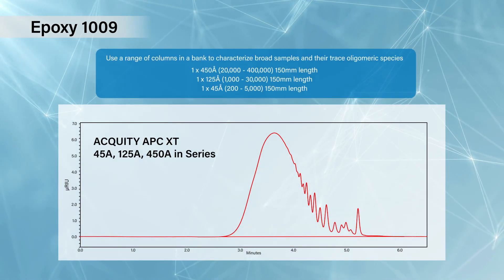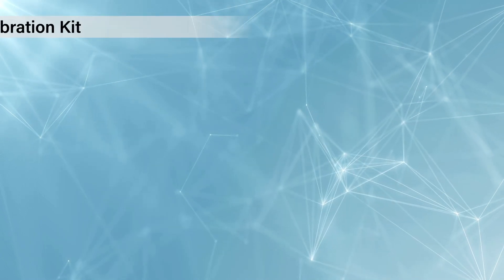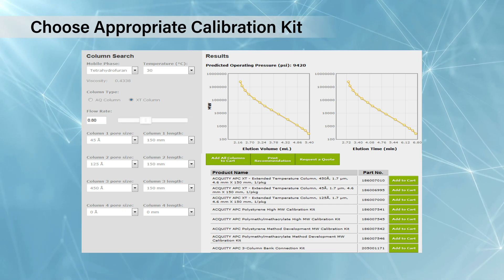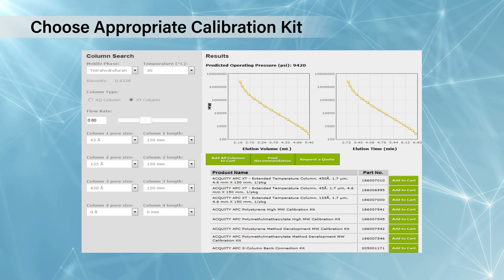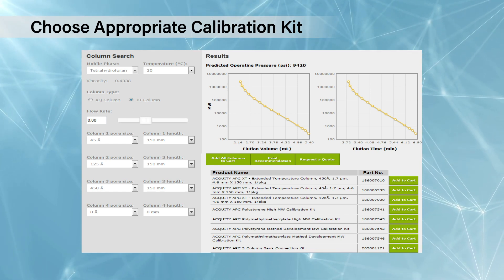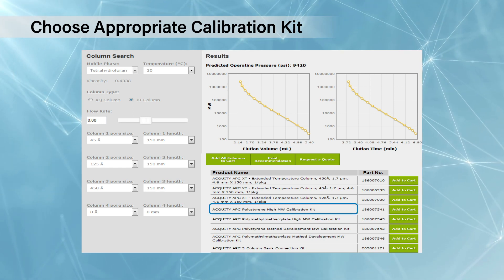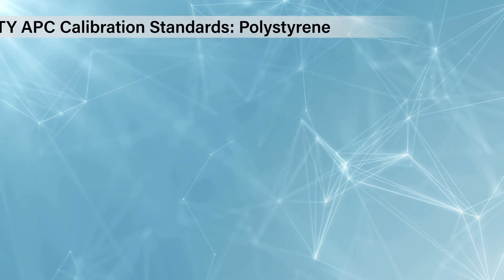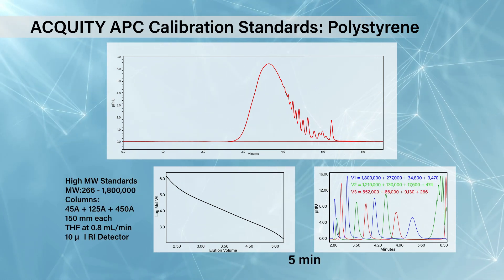Going back to the epoxy polymer we discussed earlier and looking again at the APC column selector tool, it also shows you what calibration kits are suitable — for example, polystyrene or PMMA. Depending on what solvent you choose and what bank of columns you have, it will suggest both the chemistry and which type of kit is optimised for your column bank. Here we have selected a polystyrene calibration, the most common type of standard for THF-based polymer chromatography.